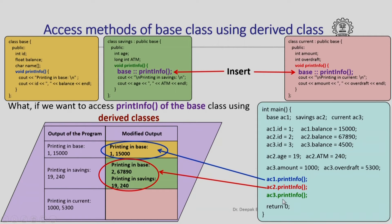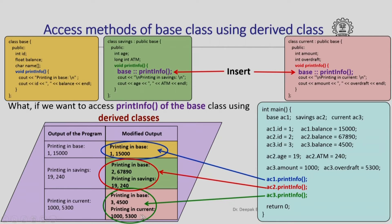Similarly, when I invoke AC3.print info, it will first invoke print info of the base class, so it will say 'printing in base' and give the values of ID and balance of AC3, which are 3 and 4500. Then it will additionally execute the statements that print 'printing in current' and give the amount and overdraft values, which are 1000 and 5300 as initialized.